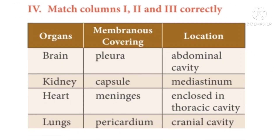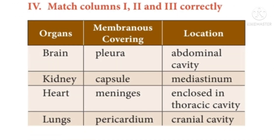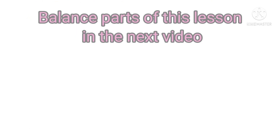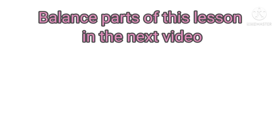Part 4: Match the following — organs, membranes covering, and location. Brain: answer — Meninges, cranial cavity. Kidney: answer — Capsule, abdominal cavity. Heart: answer — Pericardium, mediastinum. Lungs: answer — Pleura, enclosed in thoracic cavity.